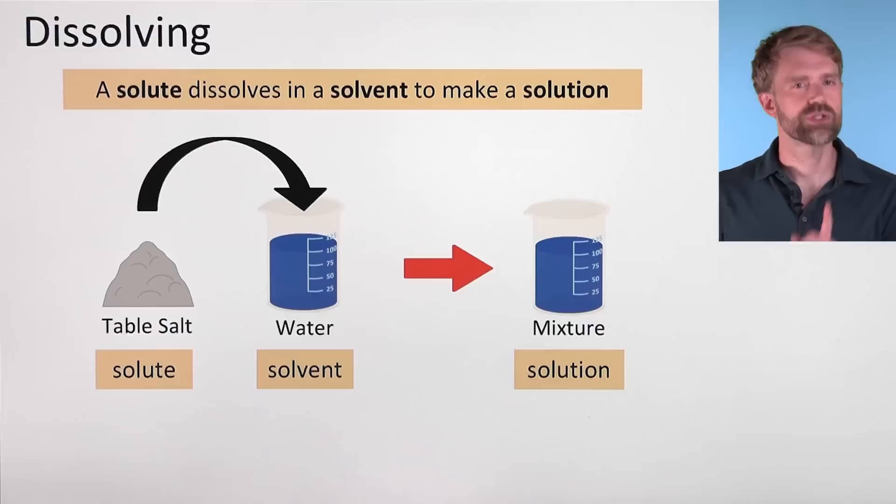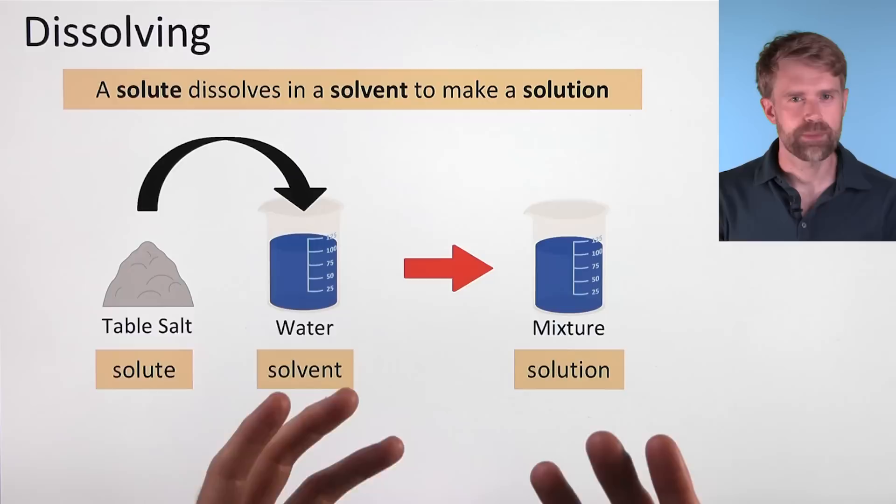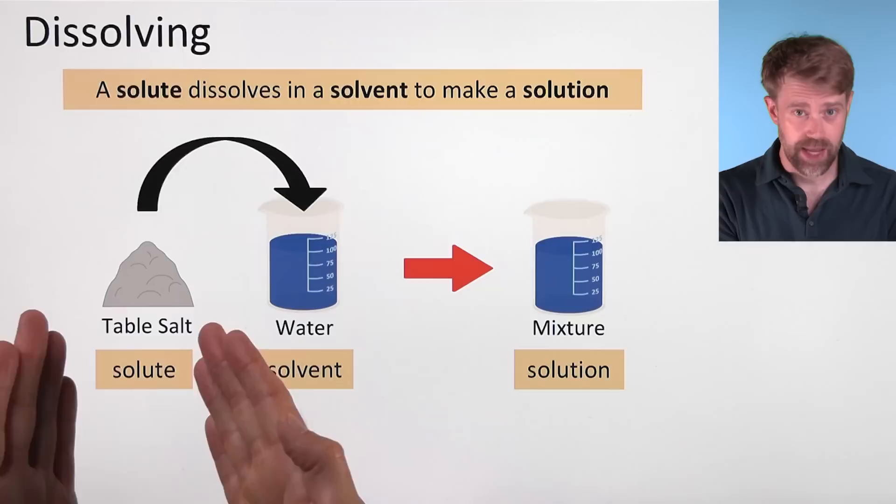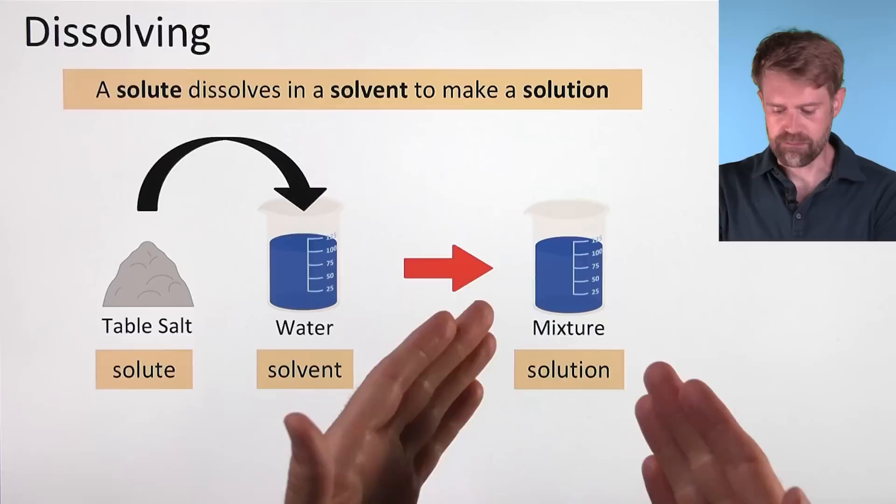Here's a background that you need. At the most basic level, we're talking about dissolving, and there's some terminology that you'll see used over and over again. A solute dissolves in a solvent to make a solution. So if we're dissolving table salt into water, table salt is the solute, water is the solvent, and the mixture that we make is called a solution.